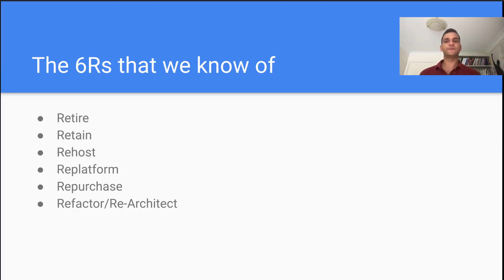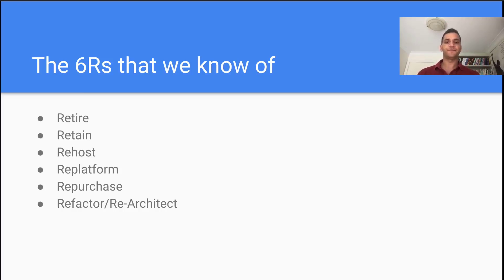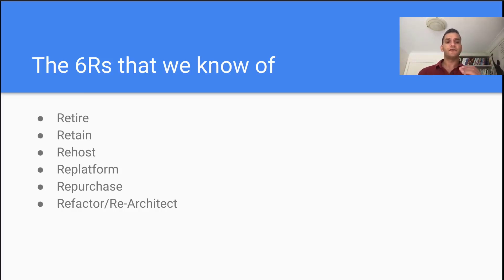Re-host, also called lift and shift, is one of the most basic ways of migrating to the cloud. It means taking your applications and systems and moving them exactly as-is into the cloud environment. This approach is great for organizations that need to migrate quickly — for example, a data center lease that is about to expire. Re-platform, also sometimes called lift and shift plus, allows you to take advantage of some special capabilities of the cloud while keeping the application core architecture the same. Often re-platforming is used when replacing database backends of applications with the corresponding PaaS database solutions of a cloud provider.